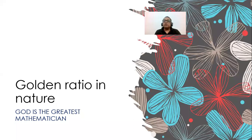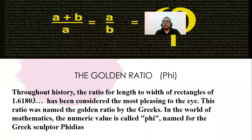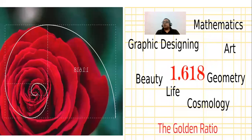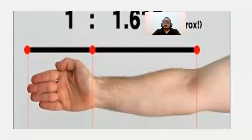The golden ratio appears everywhere in nature, which proves that God is the greatest mathematician. The golden ratio is represented by the Greek letter phi. Leonardo Fibonacci was an Italian mathematician — look at his series: 1, 1, 2, 3, 5, 8... when you add consecutive numbers you get the next. This Fibonacci series connects to the golden ratio, and you will find lots of examples in graphic design and geometry.